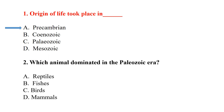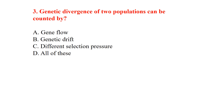MCQ 2: Which animal dominated in the Paleozoic era? It was the fishes. MCQ 3: Gentle divergence of two populations can be counted by — it was counted by genetic drift.